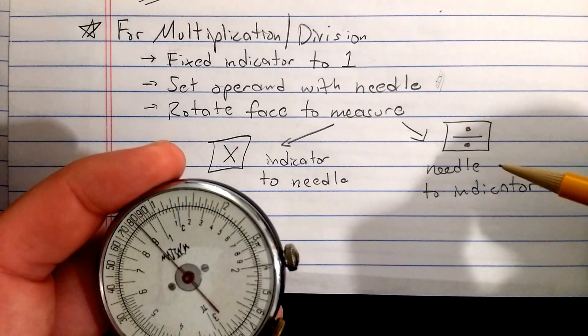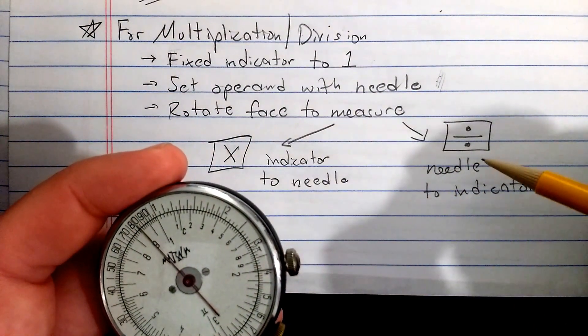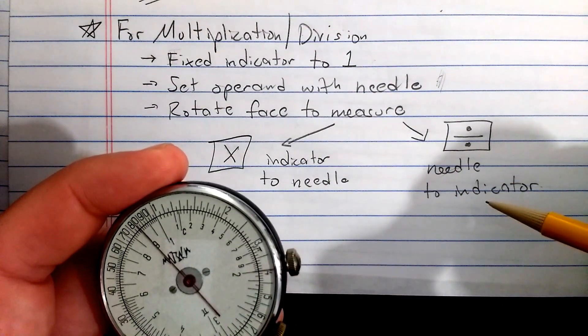To divide, I put the number I want to divide, not divide by, but to divide at the needle. And then I read the result at the indicator. Let's see. We already talked about reading squares and square roots directly. Let's do a little bit more complicated of an operation.